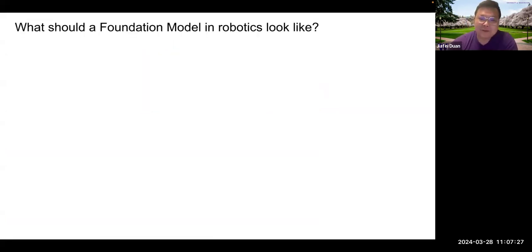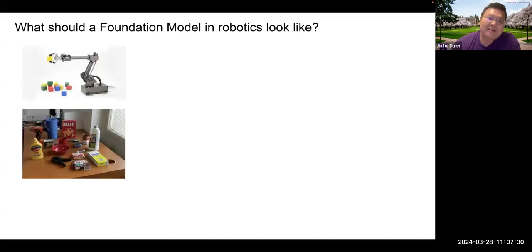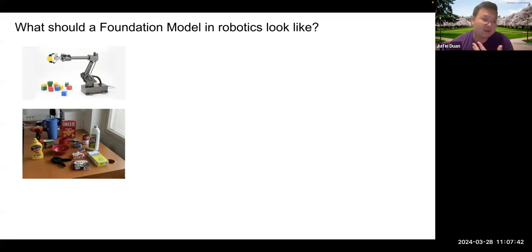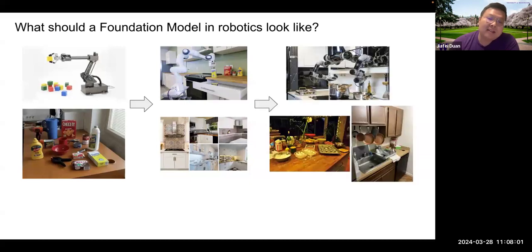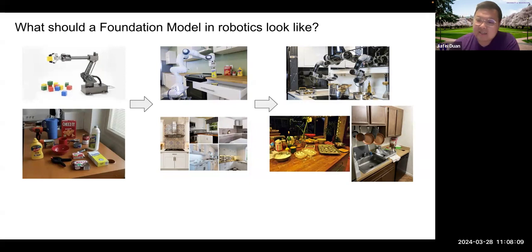More specifically, what is that foundation model for robotic manipulation? Back in the days, people worked extensively on manipulation using traditional methods like pose estimation, TAM-based methods for task and motion planning. But that has transformed over the years because we don't really live in a tabletop setting. In the real world, you want your household robot to perform general purpose manipulation in cluttered environments and to manipulate personalized objects. That is what a foundation model in robotics should look like.